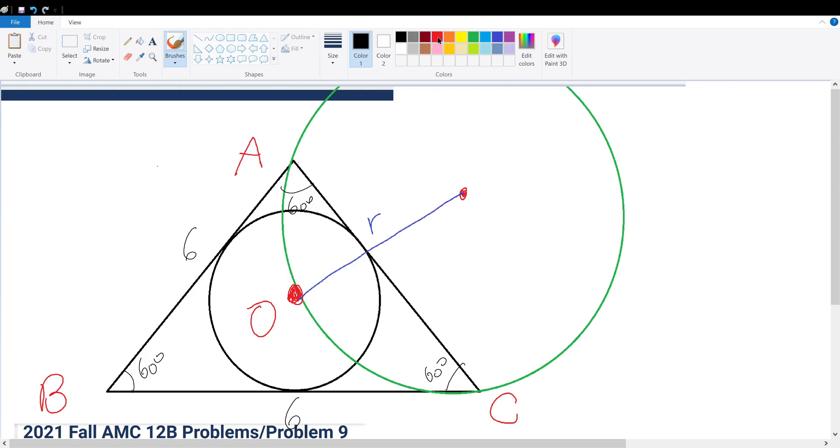If we draw the height of this equilateral triangle down like that, it bisects this side, so that would be side length 3, and this also bisects the angle, so that would be 30 degrees right there.